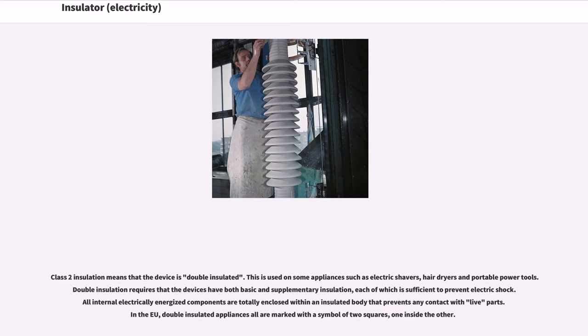Class 2 insulation means that the device is double insulated. This is used on some appliances such as electric shavers, hair dryers, and portable power tools. Double insulation requires that the devices have both basic and supplementary insulation, each of which is sufficient to prevent electric shock. All internal electrically energized components are totally enclosed within an insulated body that prevents any contact with live parts.